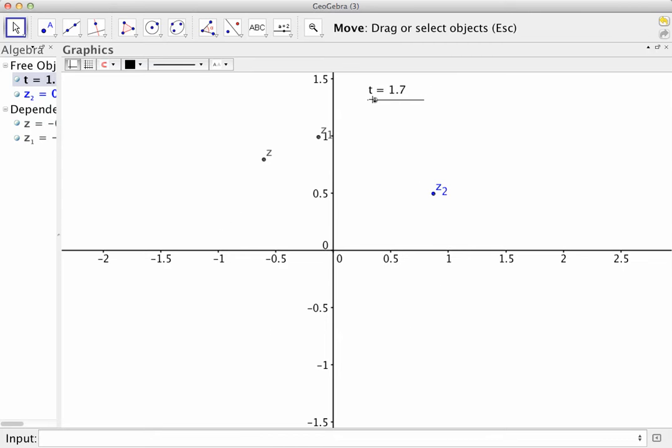So then the question that we really want to answer is, for what value of theta does z sub 1 times z sub 2 just equal i? Well, you can kind of get that here. We want them to multiply, and we want z sub 1 times z sub 2 to end up right here, which would be i on the complex axis.